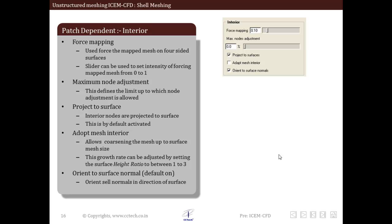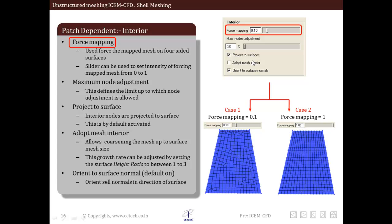Now we will see the options related to interior. First is force mapping. As we all know, structured map meshes are always better than paved unstructured ones. This option tries to force the mapped scheme on surfaces and its extent can be controlled by a slider bar. The default value is 0 and for hybrid meshes 0.2 is preferred. In case 1 it is 0.10 and in case 2 we have increased it to 1, so the degree of structured mapped mesh increases as we increase the force mapping index.